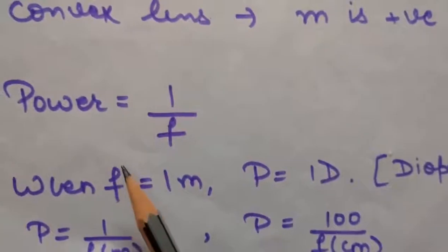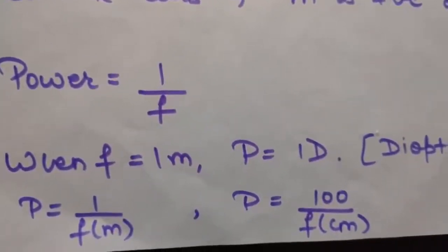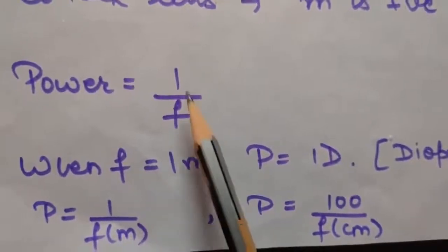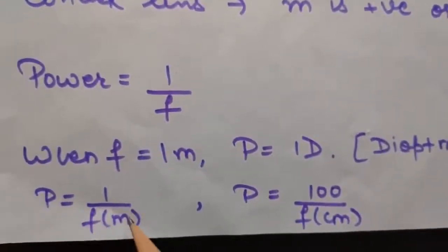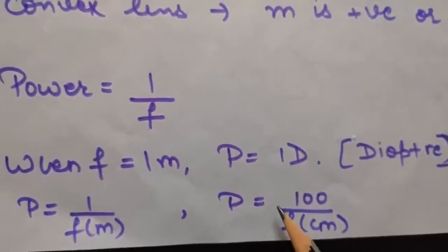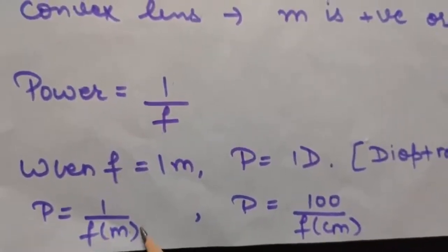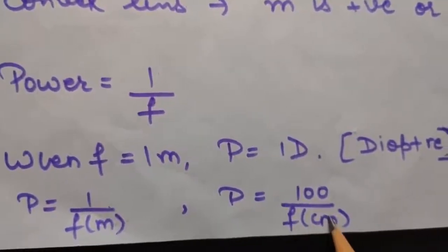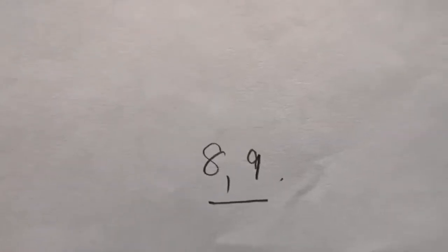Power of a lens is defined as the reciprocal of focal length: P = 1/f. The SI unit of power is diopter — if focal length is 1 meter, power is 1 diopter. If focal length is in meters, use P = 1/f(meters); if in centimeters, use P = 100/f(cm). After today's lecture, do questions number 8 and 9 from chapter number 9 — ray optics — in your NCERT book. Thank you.